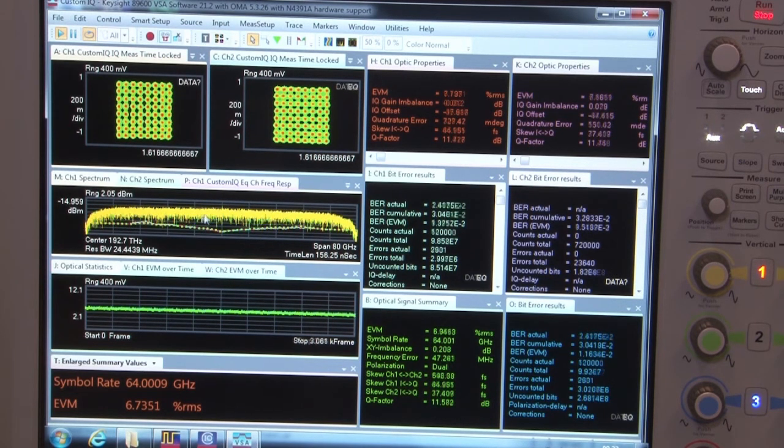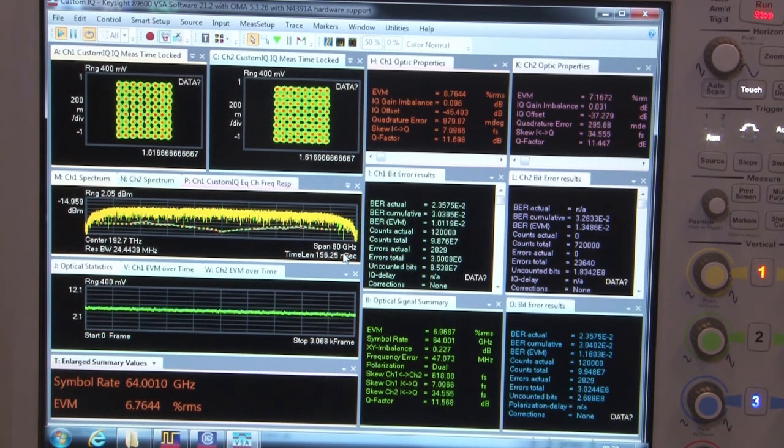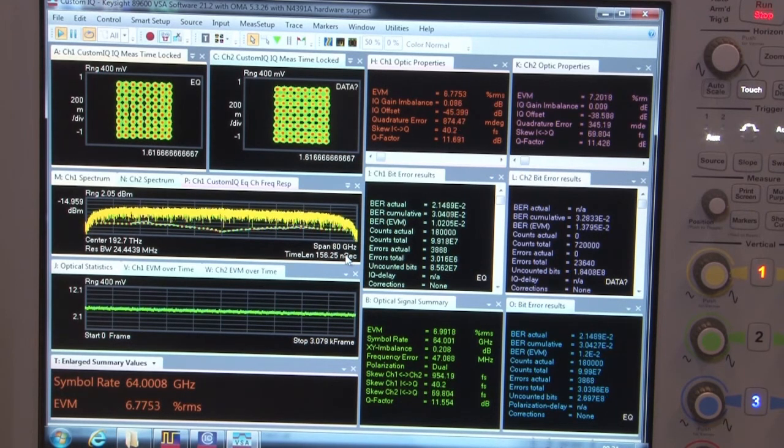Down here we have a spectral view of the signal. You see the flatness of the signal currently running with a span of 80 gigahertz. We can go all the way up to 125 gigahertz with this version of the optical modulation analyzer, which comes in basically two flavors.